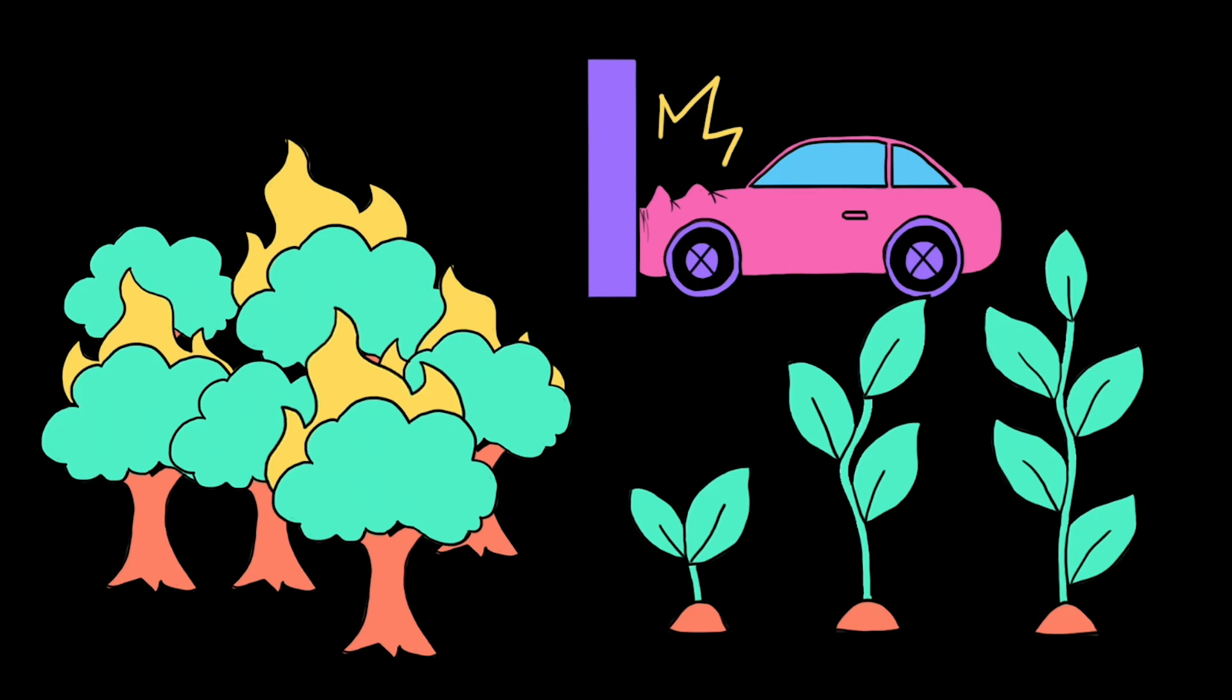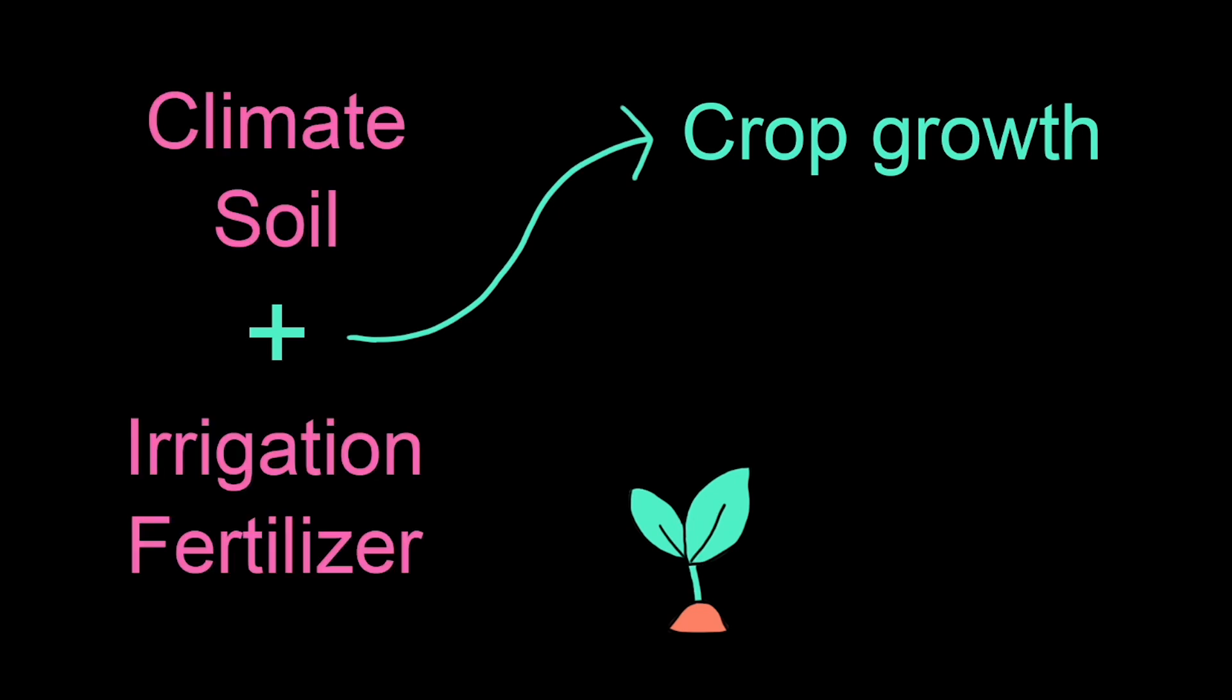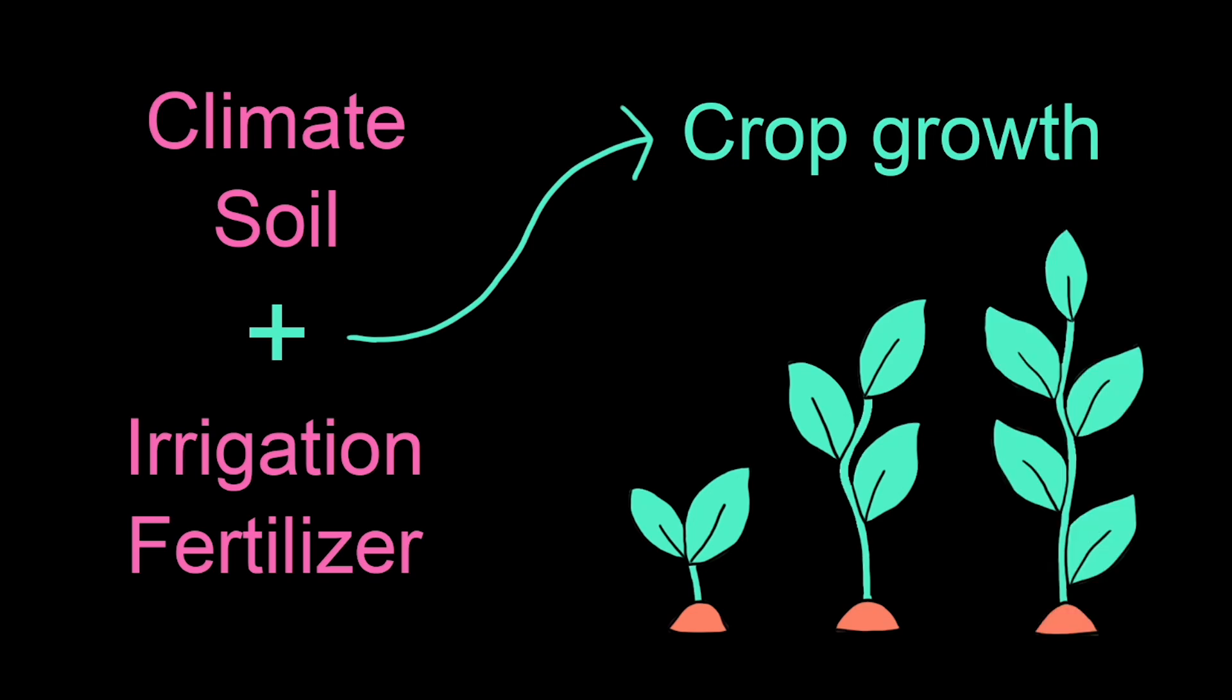But if we build a computer simulation, we can repeat the experiment as many times as we want for free, modifying different data inputs along the way. To simulate crop growth, I might combine climate and soil data with different irrigation and fertilizer choices, and then repeat how that affects my crop growth over a series of time steps.